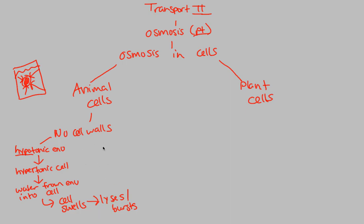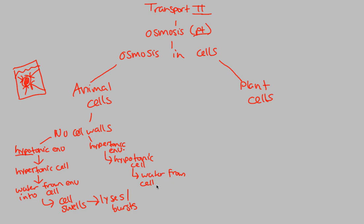Let's think of a different situation: a hypertonic environment. Now the cell itself is going to be hypotonic — a hypotonic cell. Instead of water going from the environment into the cell, we expect water going from the cell to the environment. The cell has a very low tonicity, a very low amount of solute, so it has water to give to this hypertonic environment. Water moves from cell to environment.